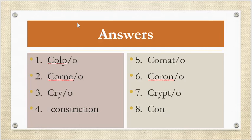Number 5, comato. Number 6, corano. Number 7, crypto. Number 8, con or con.